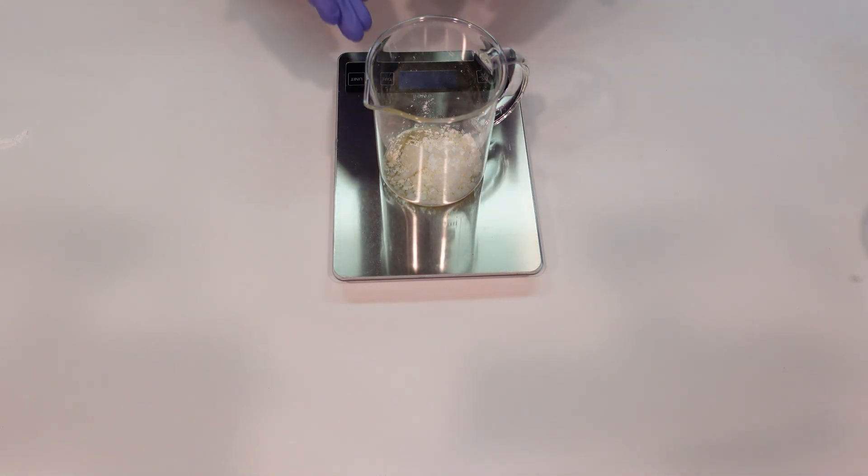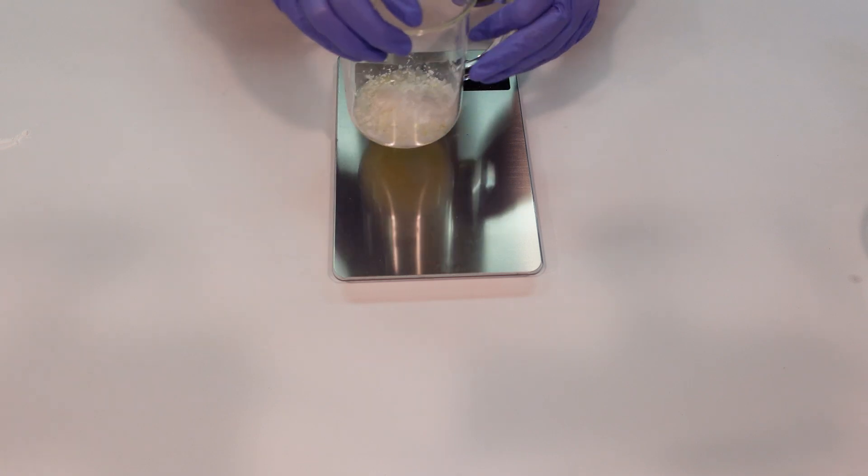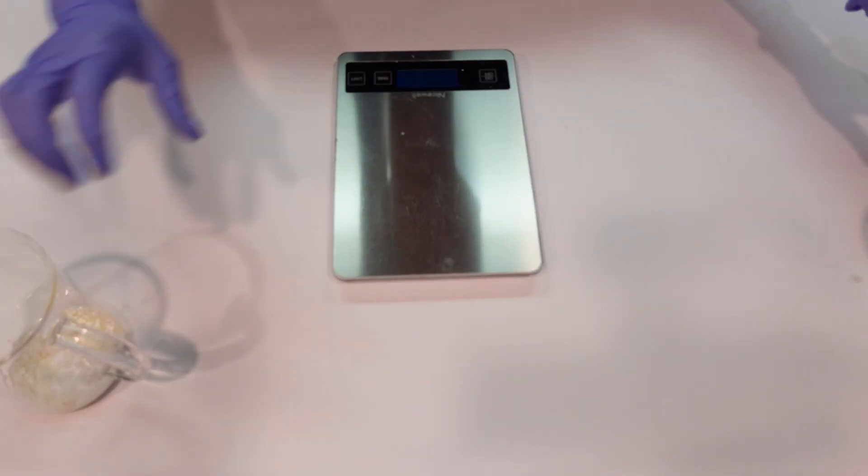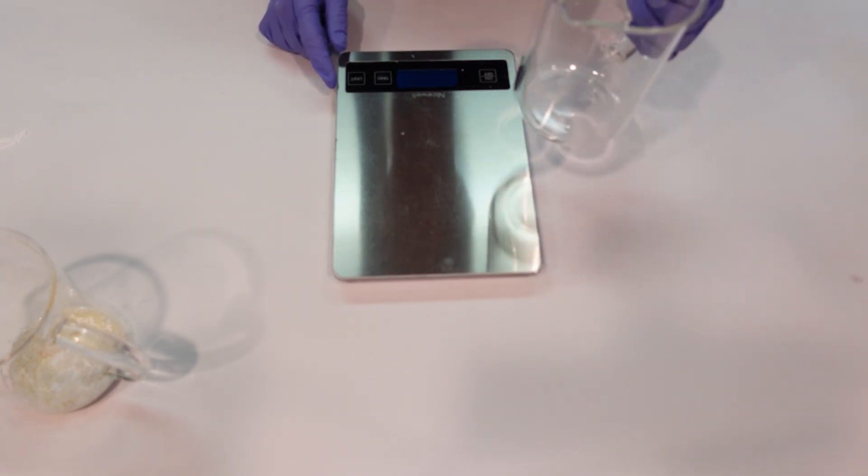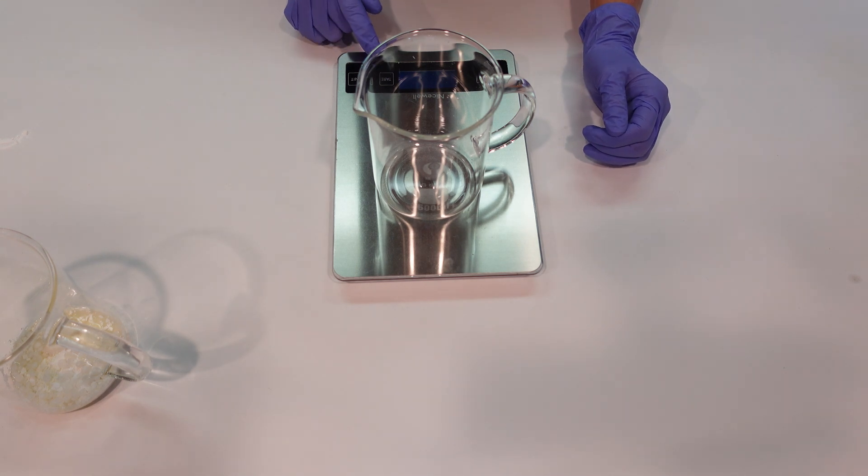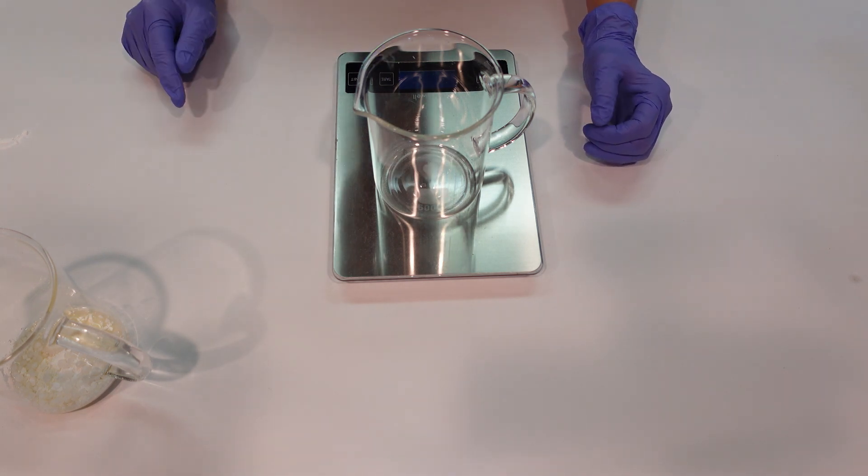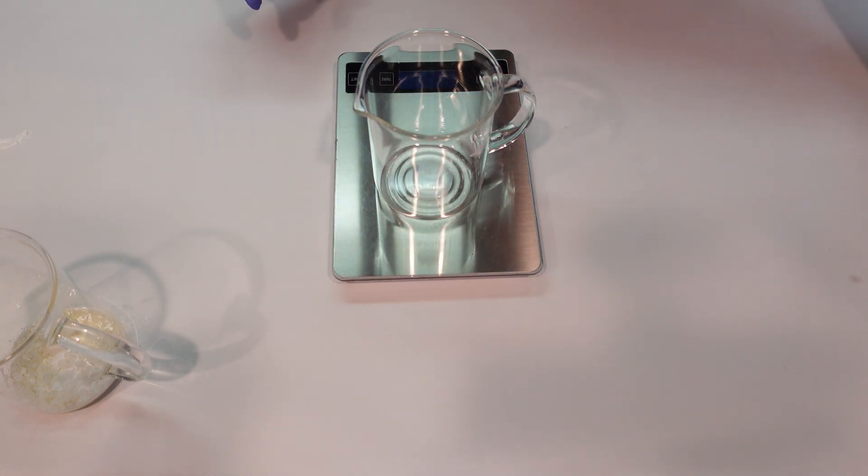So we're just going to go ahead and add in the zinc ricinoleate. I got this one at make your own dot buzz. All right, so that's going to be it for the heated oil phase. We're making about a hundred gram batch today, so I'm going to go ahead and set that aside and then we're going to go ahead and weigh off the heated water phase for this formula.